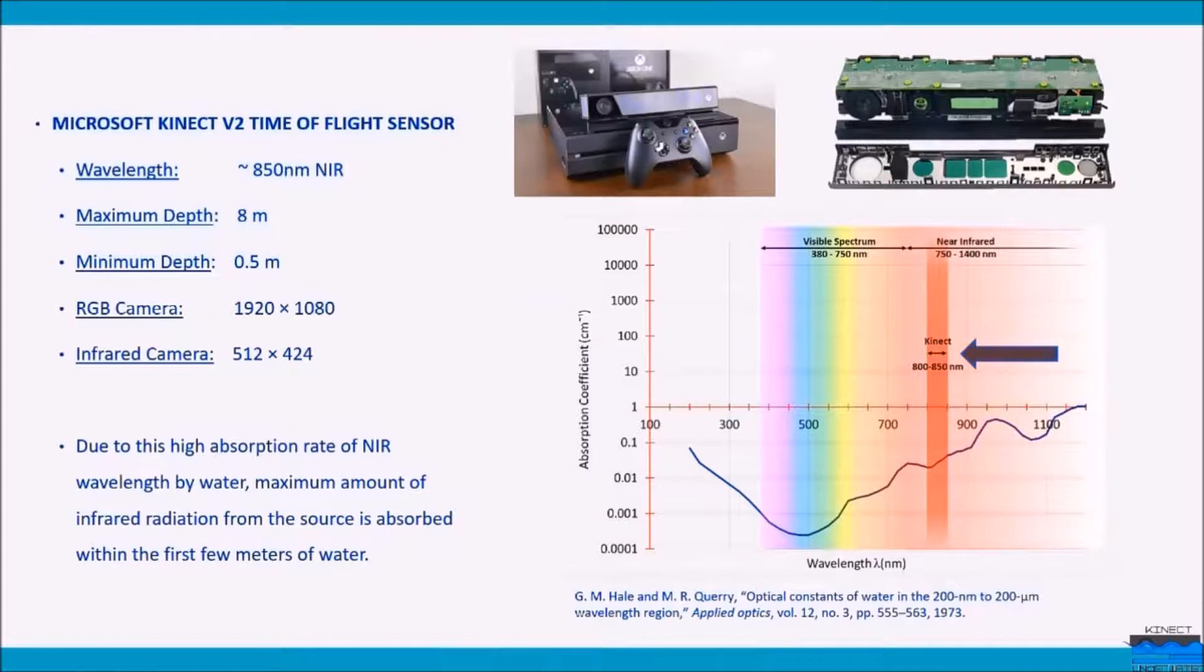Commercial RGBD cameras such as Microsoft Kinect provide fast, accurate, and economical 3D scanning solutions in a single package. RGBD cameras work in a near-infrared wavelength which has a high absorption rate in water. However, experiments have shown that these sensors can still work underwater at acceptable performance levels with reduced depth.